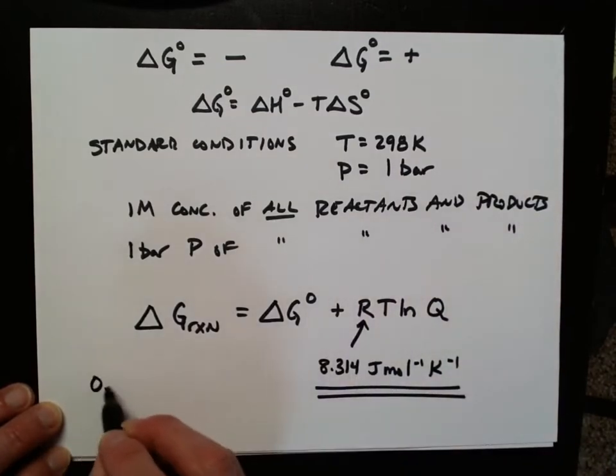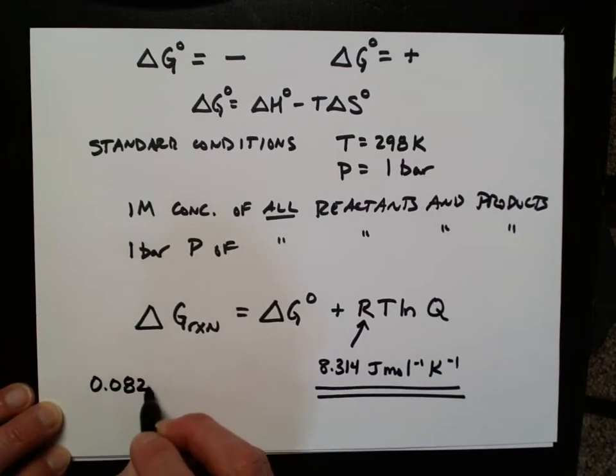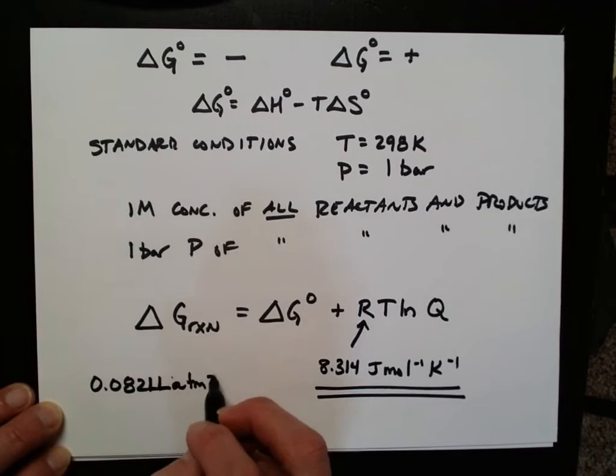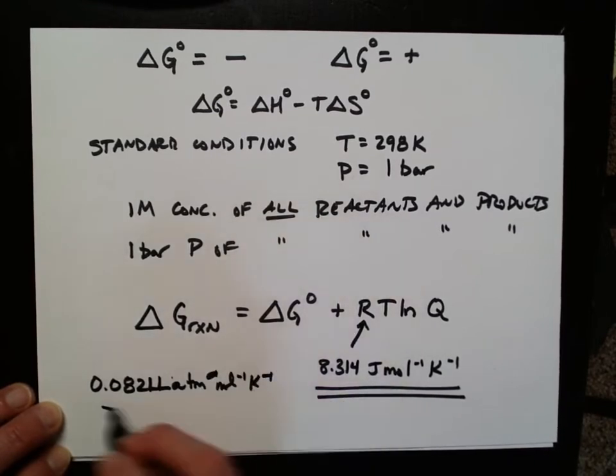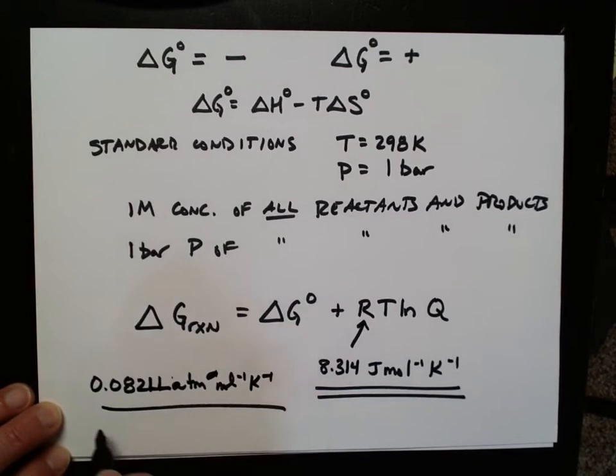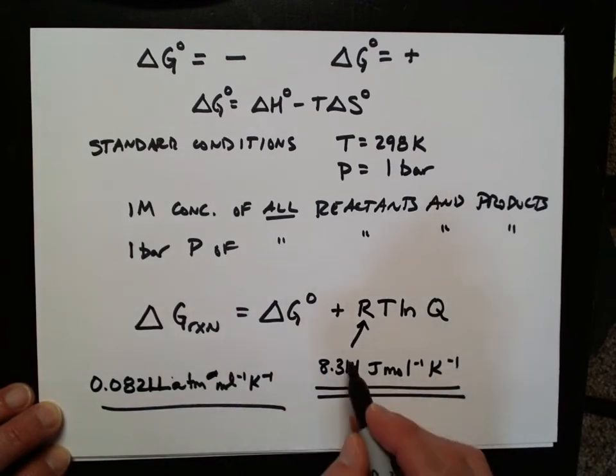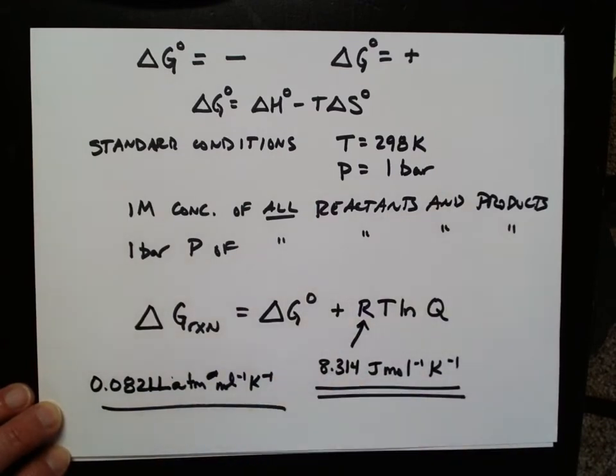You might remember the gas constant R, 0.0821 liter atmosphere per mole per Kelvin. This I like to call the chemistry R. This is the physics R. We're going to end up using this one when we use this particular equation.